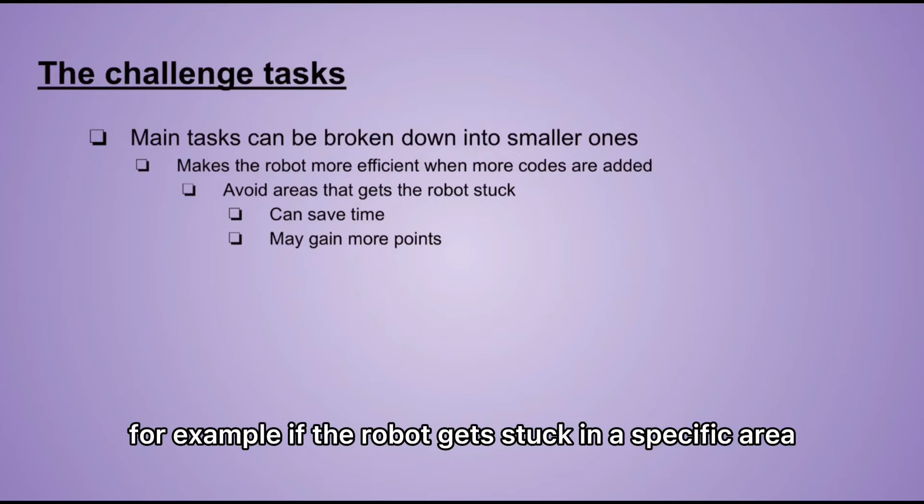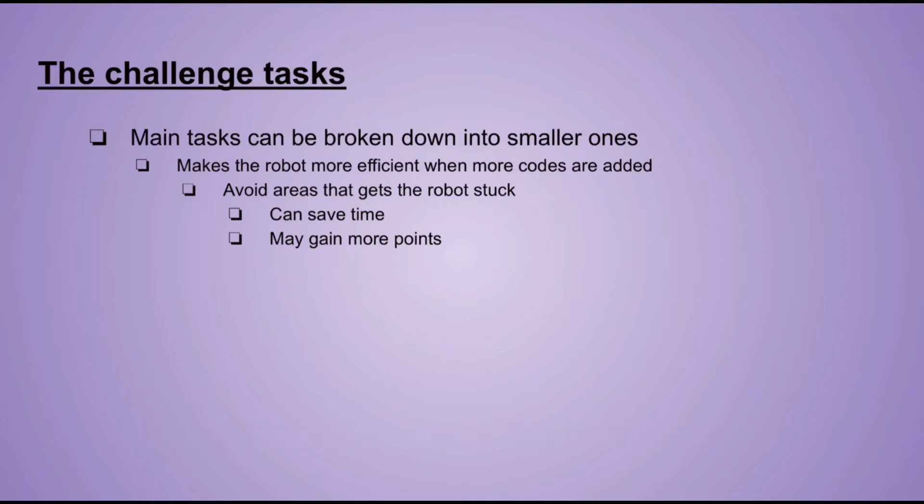For example, if the robot gets stuck in a specific area and spends a few seconds trying to get out, we can use the coordinates of that area and code the robot to avoid it, which helps with navigation. This improves the robot significantly and saves time while earning more points.